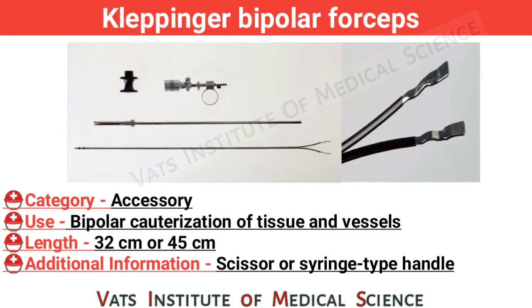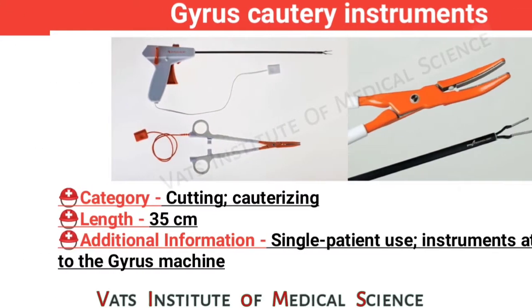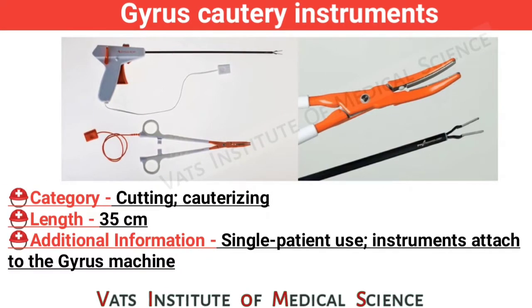Clappinger bipolar forceps. Category: accessory. Use: bipolar cauterization of tissue and vessels. Length: 32 cm or 45 cm. Additional information: scissor or syringe type handle.